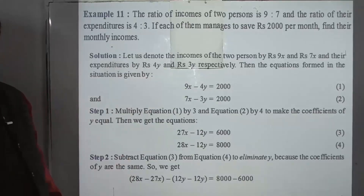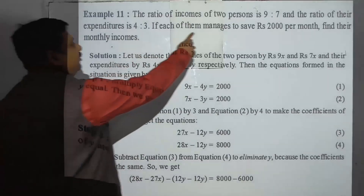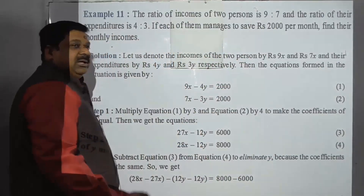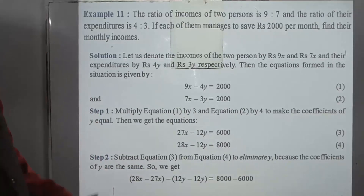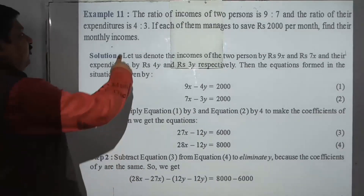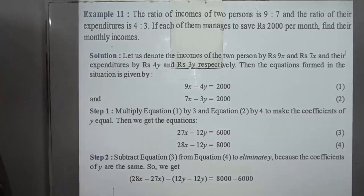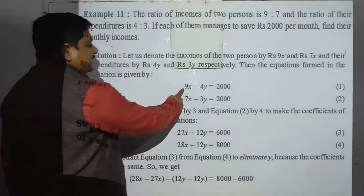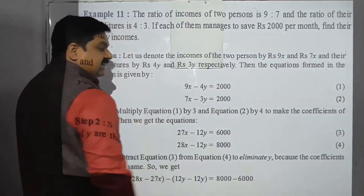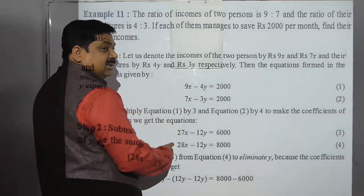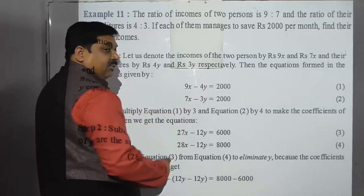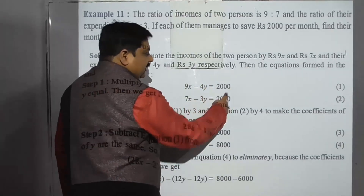Let us denote the incomes of the two persons by 9x and 7x, since their incomes are in the ratio 9:7. Similarly, their expenditures can be written as 4y and 3y. Now, income minus expenditure gives savings. So the first person's equation is: 9x minus 4y equals 2000.